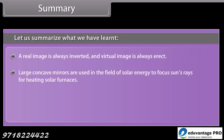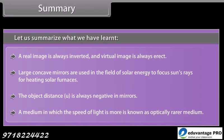A real image is always inverted and a virtual image is always erect. Large concave mirrors are used in the field of solar energy to focus the sun's rays for heating solar furnaces. The object distance U is always negative in mirrors. A medium in which the speed of light is more is known as an optically rarer medium.